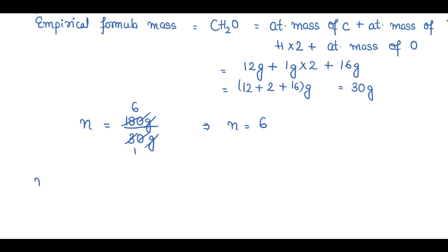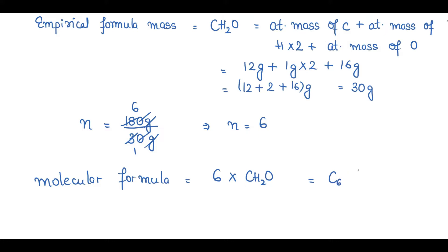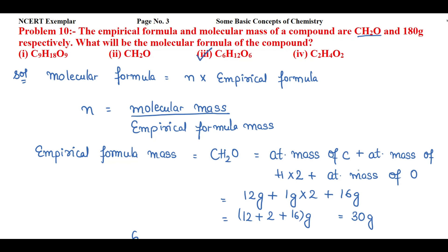Now we find the molecular formula by multiplying N = 6 with the empirical formula CH2O. Carbon: 6 × 1 = C6. Hydrogen: 6 × 2 = H12. Oxygen: 6 × 1 = O6. So the molecular formula of the compound is C6H12O6, which corresponds to the third option — the correct answer.